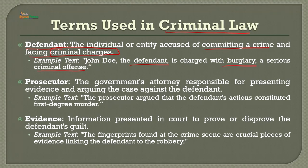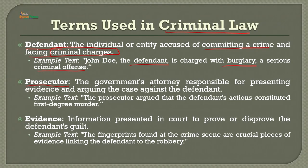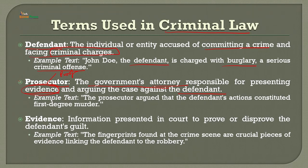In criminal court, we need a prosecutor. The prosecutor is the government's attorney responsible for presenting evidence — proof — and arguing the case against the defendant. For example, the prosecutor argued that the defendant's action constituted first-degree murder.